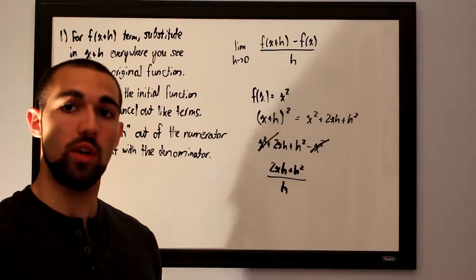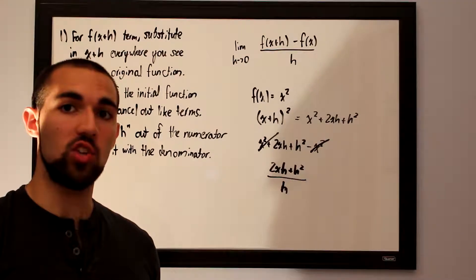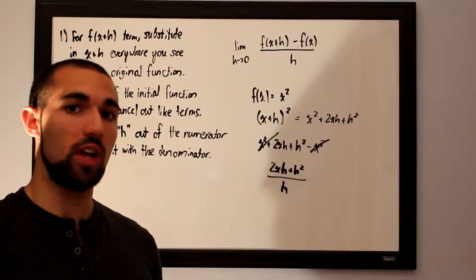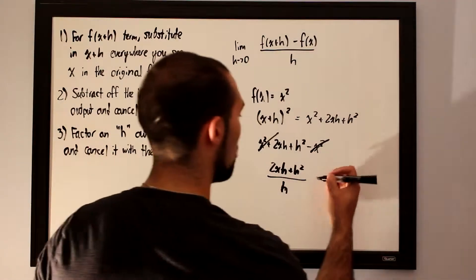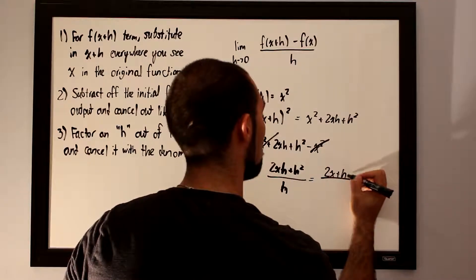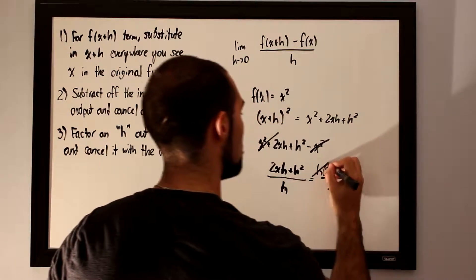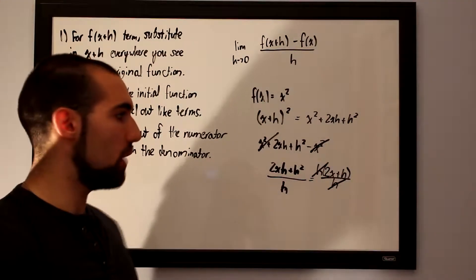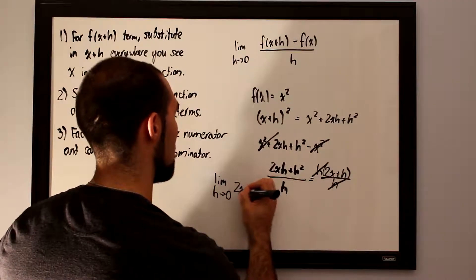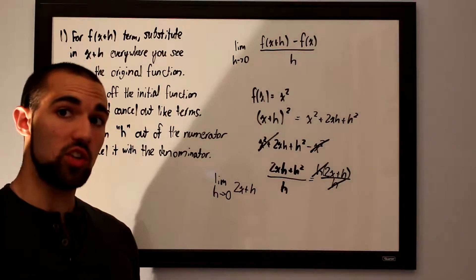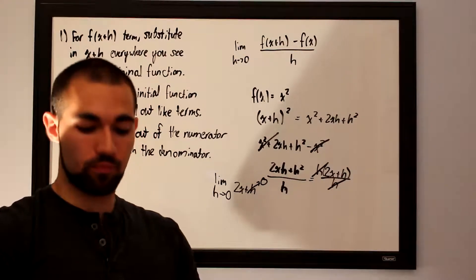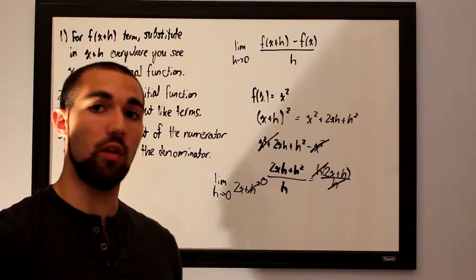In the third step, factor an h out of the numerator and cancel it with the h in the denominator so we don't end up dividing by zero. This will always be possible. Factoring gives us h times the quantity 2x plus h, over h. The h's cancel, leaving 2x plus h. Then we take the limit as h approaches zero — this h term disappears altogether, leaving us with just 2x.